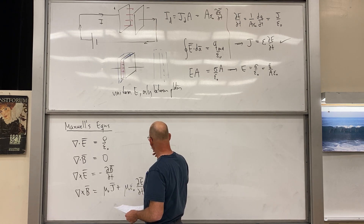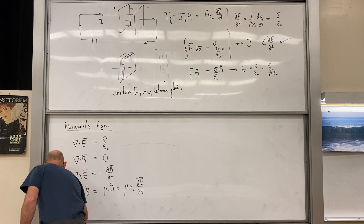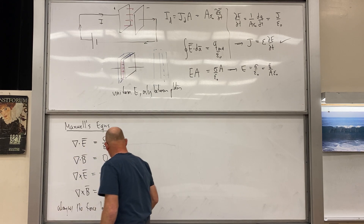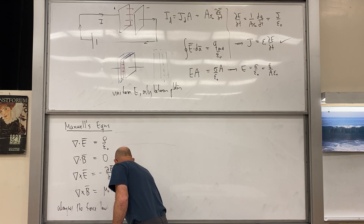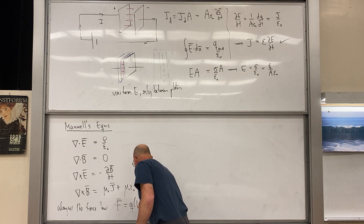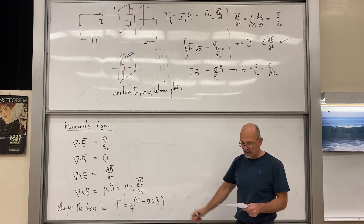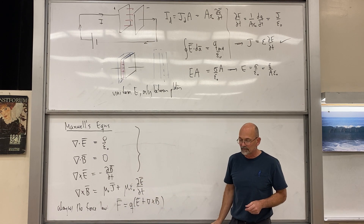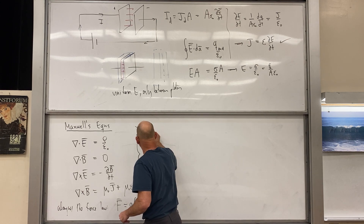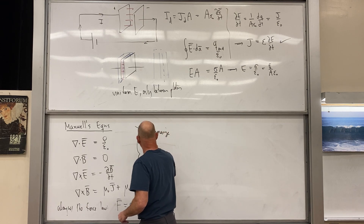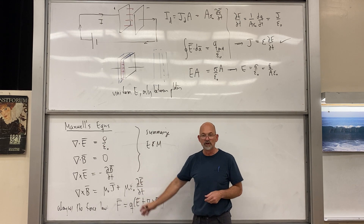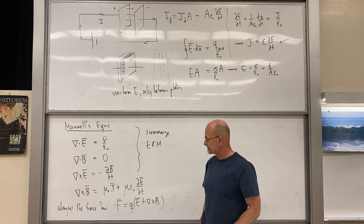Along with the Lorentz force law — F = q(E + v × B) — these four equations summarize all of classical electricity and magnetism. Although there are many material properties to deal with, fundamentally you can take these and deduce everything that is known classically.